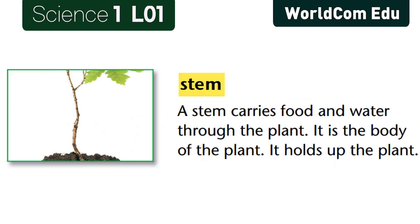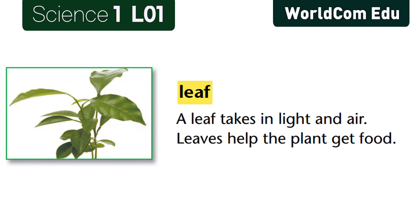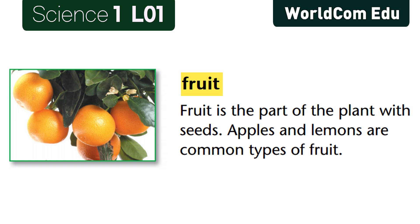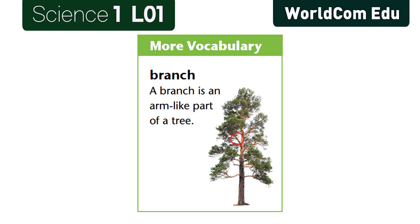Stem: A stem carries food and water through the plant. It is the body of the plant and holds up the plant. Leaf: A leaf takes in light and air. Leaves help the plant get food. Flower: Plants have flowers. Flowers make fruit and are very beautiful. Fruit: Fruit is the part of the plant with seeds. Apples and lemons are common types of fruit. Branch: A branch is an arm-like part of a tree.